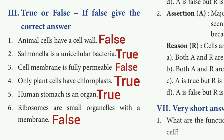True or False — if false, give the correct answer. First one: animal cells have a cell wall. The answer is false. Second one: Salmonella is a unicellular bacteria. The answer is true. Third one: cell membrane is fully permeable. The answer is false.